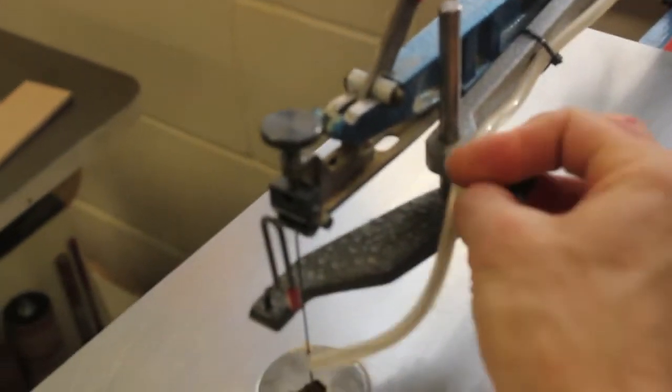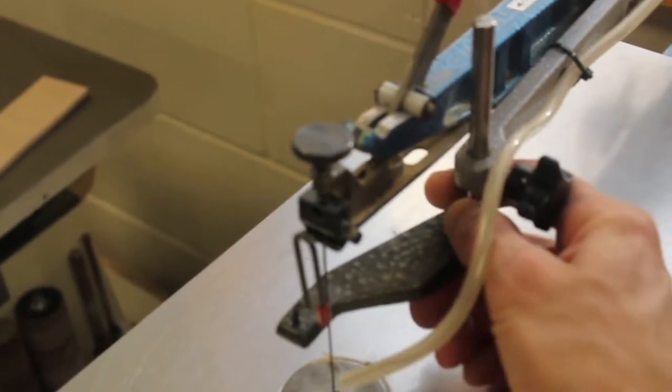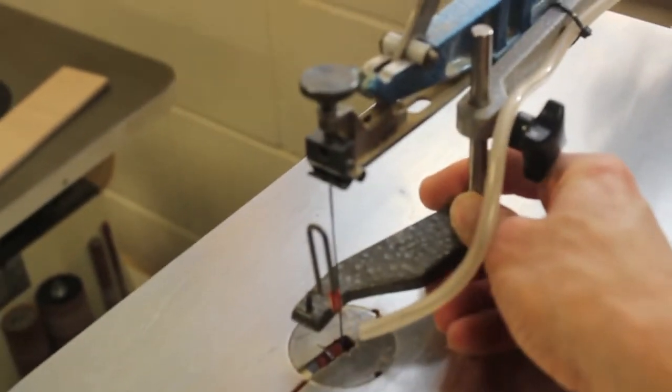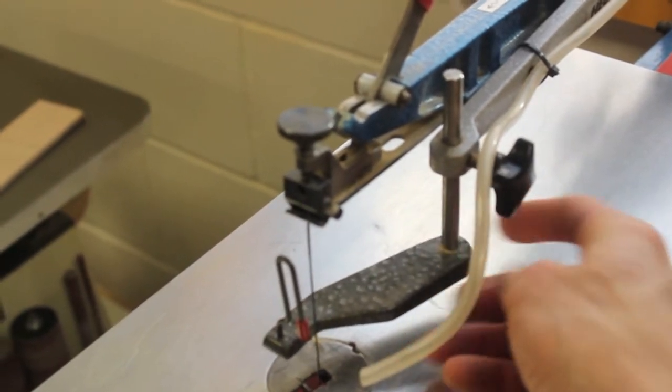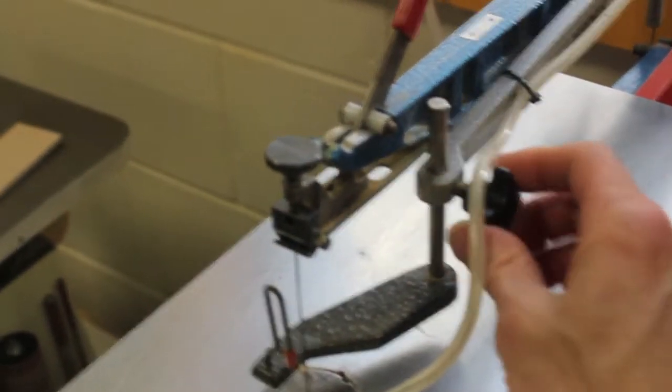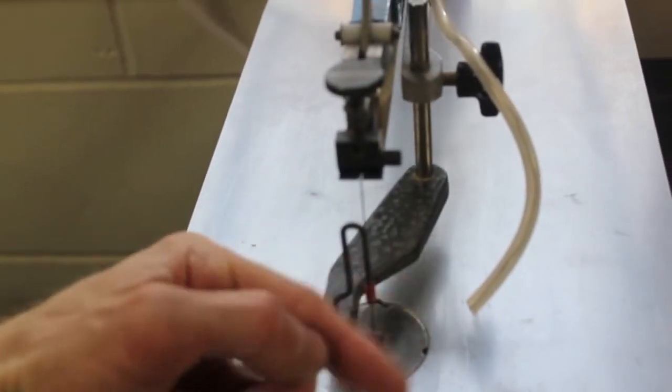Then you have this, which is a guard. You can adjust it with this bolt here, bring it down. And the guard protects you from putting your fingers into the blade. Like so. I can't touch that now.